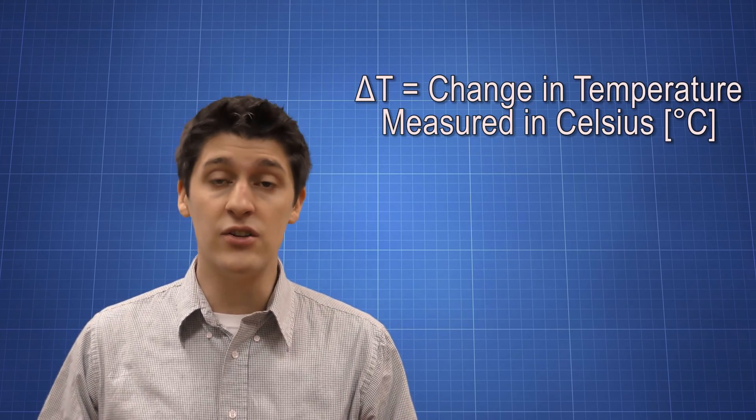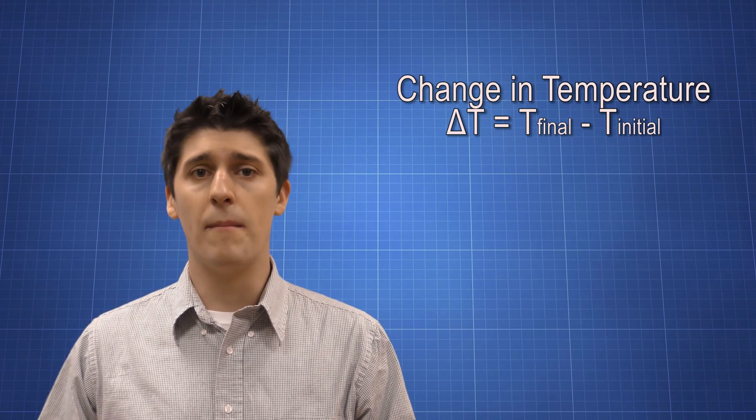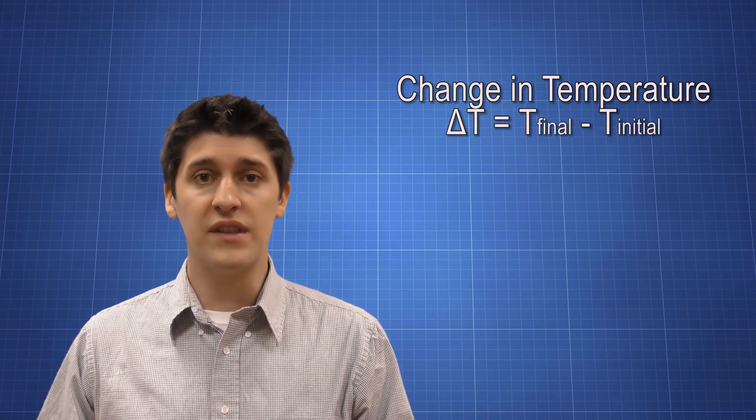Delta T stands for change in temperature. We could also write it as T final minus T initial. What that means is that I'm looking at the temperature of the system at the beginning and at the end, and that's going to tell us how much energy was either gained or lost in that system because of that change in temperature.